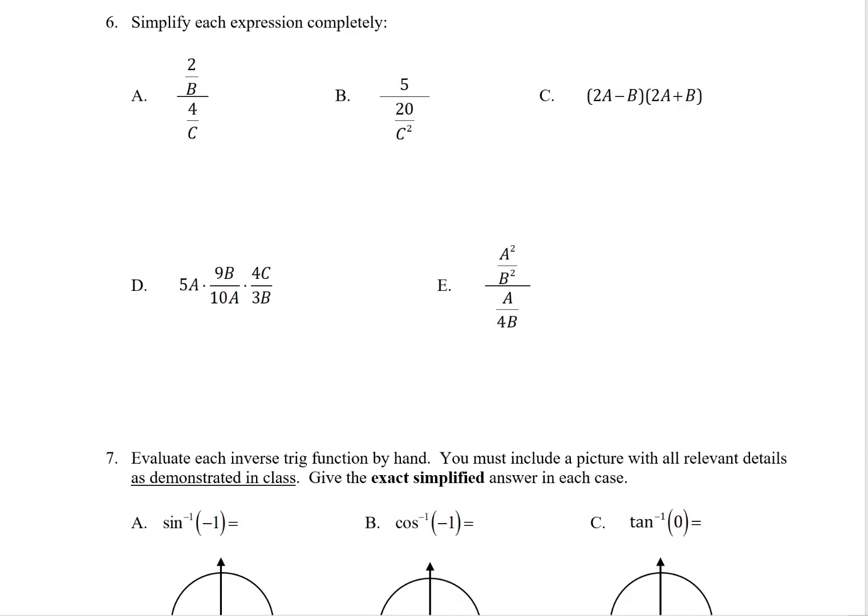Problem number six, we're being asked to simplify each expression here. In part A, probably the easiest way to think about this one is 2 over B divided by 4 over C. Well, I can divide a fraction by multiplying its reciprocal. So instead of writing divided by 4 over C, I'll write times C over 4. Then I can do some cross-cancelling. I've got that common factor of 2 and multiply across, and I'm done. C over 2B looks like the final answer.